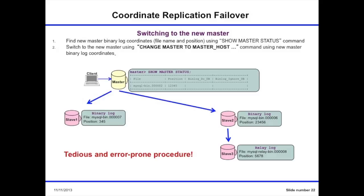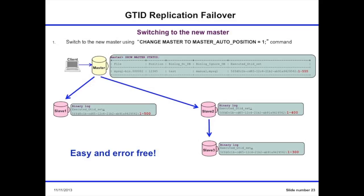With coordinate-based replication failover, when the master fails and you want a slave to point to another slave as its new master, each slave has a different state — some are further ahead — and you have to figure out what the new master already executed and where your target slave is relative to that. It's really a pain. With GTID replication, for failover you just set the auto position and let the master and slave figure it out, not you. It really works that way, and it's easy and error-free.